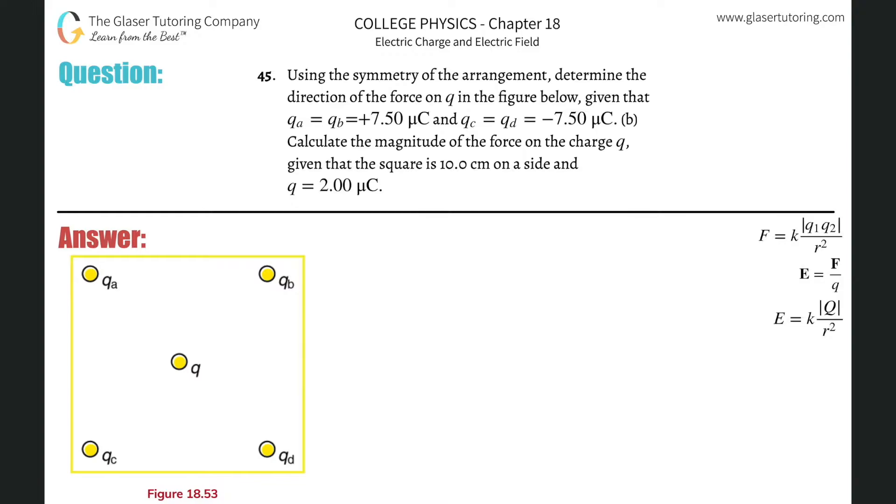Number 45. Using the symmetry of the arrangement, determine the direction of the force on Q in the figure below, given that QA is equal to QB is positive 7.5 microcoulombs.